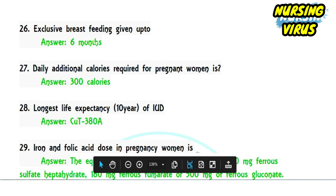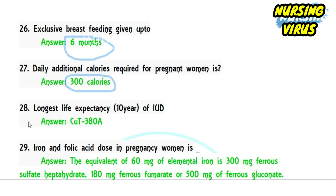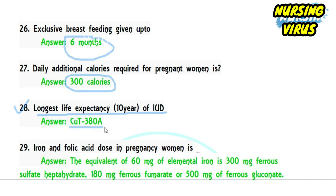Question 26: exclusive breastfeeding is given up to six months; after six months, complementary feeding is started. Question 27: the daily additional calories required for pregnant women is 300 calories; for lactating women, 550 additional calories are needed. Question 28: regarding family planning, the copper T 380A IUD has the longest life expectancy among intrauterine devices — approximately 10 years, and in some cases up to 12 years.